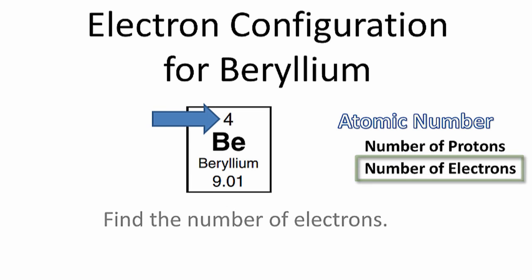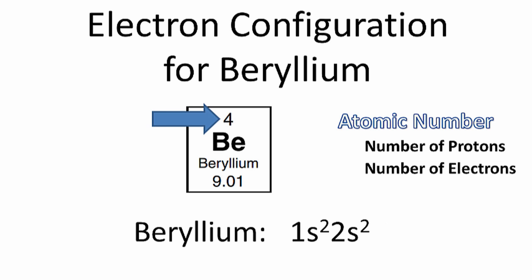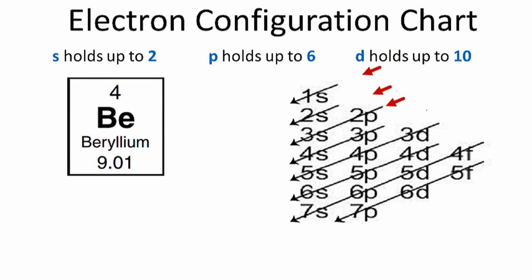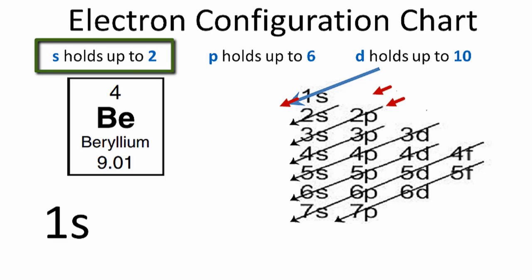Once we have the number of electrons, we can begin to write the electron configuration for beryllium. We'll use the chart on the right to write the notation. We'll go down the first row, where we have the 1s. S orbitals can hold up to two electrons, so we'll put two electrons in the 1s.